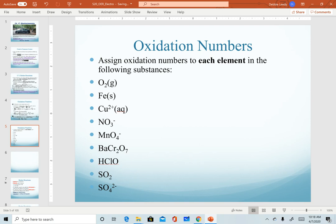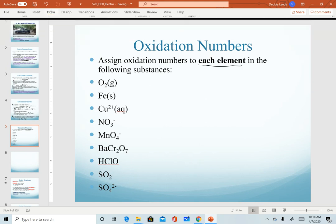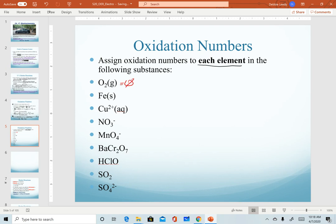So these are the examples we'll work through. When you're asked to assign oxidation numbers, you want to do that for each element listed in a substance. Here we have the elemental form of oxygen. Since it's its elemental form, that would be a zero. The same thing for iron. That is its elemental form.